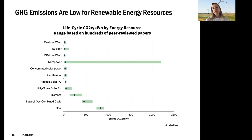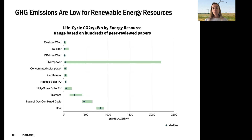Let's talk about the environmental impacts of our renewable resources. These resources have much lower environmental impacts than our fossil fuels, and lowering those environmental impacts is one key reason we're pursuing renewables. Greenhouse gas emissions tend to be really low for renewable resources, especially compared to fossil fuels — with a notable exception of biomass, since we're burning it just like fossil fuels, so it does have greenhouse gas emissions. Hydropower is unique in that flooding of vegetation can release methane, but the median emissions tend to be relatively low when looking at the overall system.